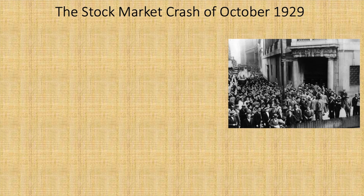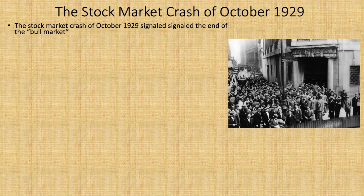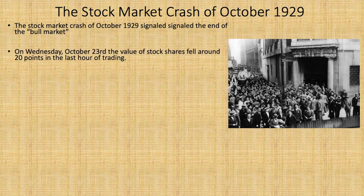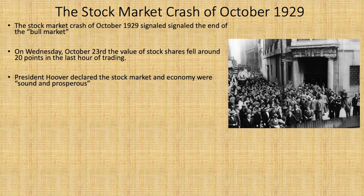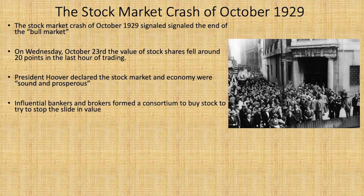So what led to the stock market crash of October 29, 1929? The bull market reached its peak on September 3, 1929 — a bull market is a very active and prosperous market. The stock market crash of 1929 signaled the beginning of the Great Depression and the end of the bull market. On Wednesday, October 23, the value of stock shares fell around 20 points in the last hour of trading, setting into motion a financial panic. The next day, a wave of selling led to dramatic drops in stock prices. President Hoover declared the stock market and economy were sound and prosperous in a hope to stop the continuing crash. Influential bankers and brokers formed a consortium to buy stocks to try to stop the slide in value, but their efforts were not enough.